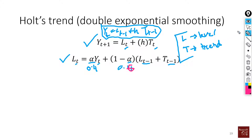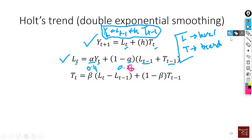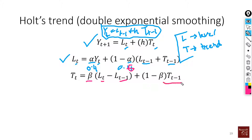To estimate the trend, we use another smoothing parameter beta. T(t) = beta times (L(t) - L(t-1)) plus one minus beta times T(t-1). So we are taking the difference between two consecutive levels to get the trend, and combining it with the previous trend. Both equations are quite similar; we are just introducing two smoothing parameters.